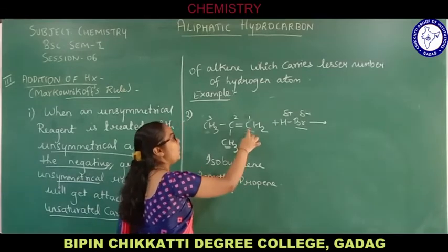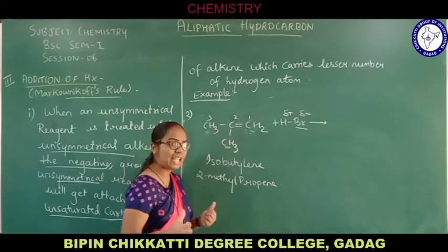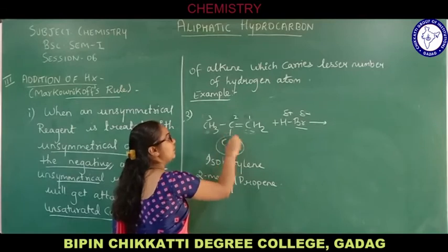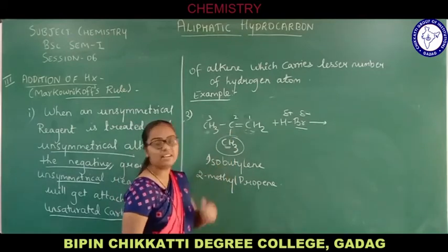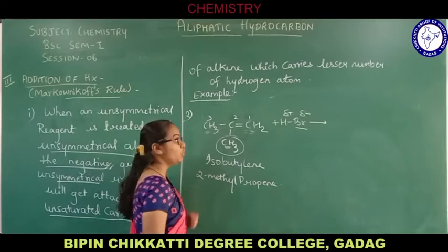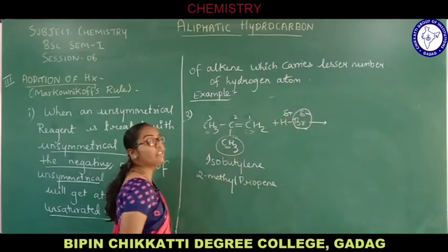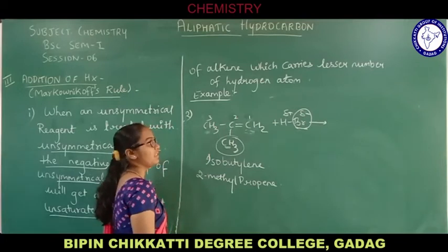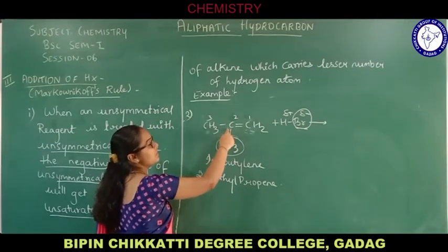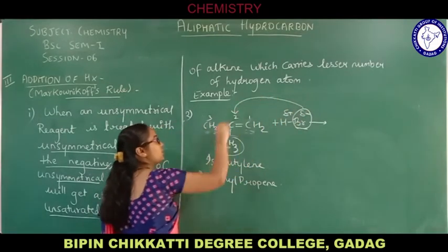Carbon number one is carrying two hydrogen atoms, and carbon number two is not carrying any hydrogen atom at all, because at carbon number two the methyl group is attached. So no hydrogen atom is present at carbon number two. Therefore the bromide ion will go and get attached to carbon number two.